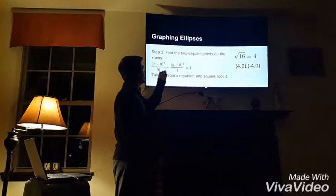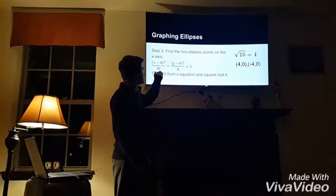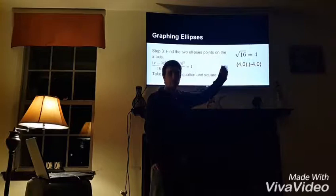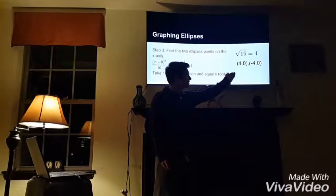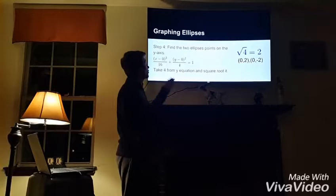Step 3 is to find the two ellipse points on the x-axis. On the x side, you are going to take 16 from the x equation and square root it. The square root of 16 equals 4. So your two ellipse points on the x-axis are (4, 0) and (-4, 0).